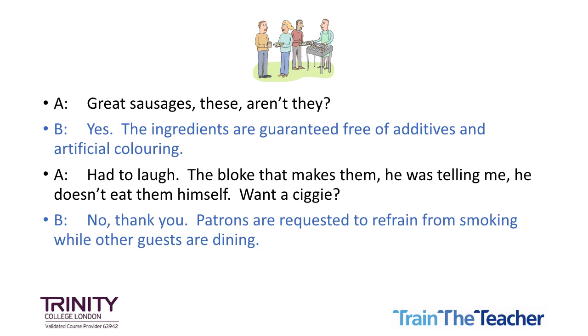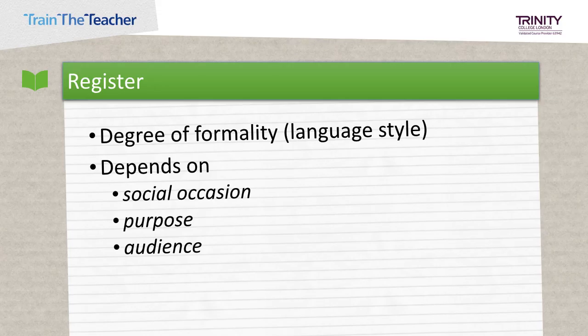You probably decided that speaker B is more accurate, whereas speaker A sounds more natural. What speaker B says — i.e., the text in blue — is probably what you would read rather than hear, on packaging or on a sign at a restaurant. So what is the key point here? The speakers were speaking in different registers, also known as the degree of formality or the language style. Which register a speaker chooses to adopt is dependent on the social occasion — is it a friend's barbecue, a work function, a family dinner, etc.